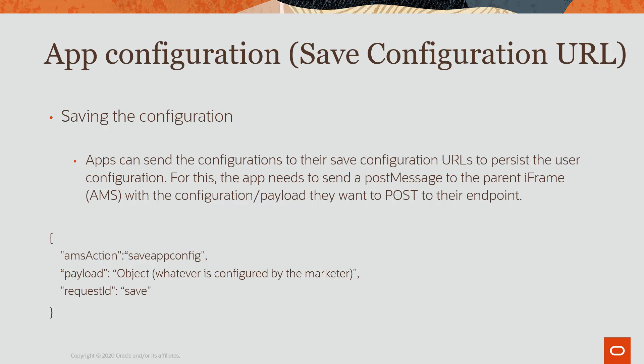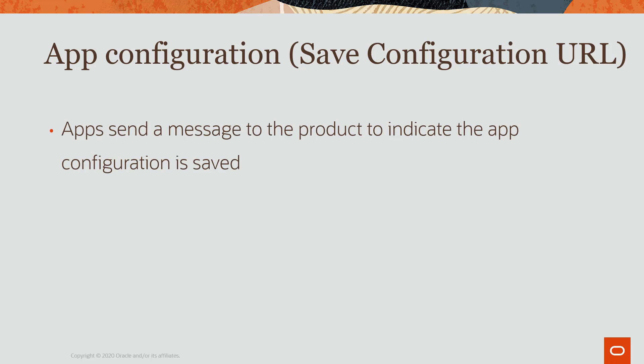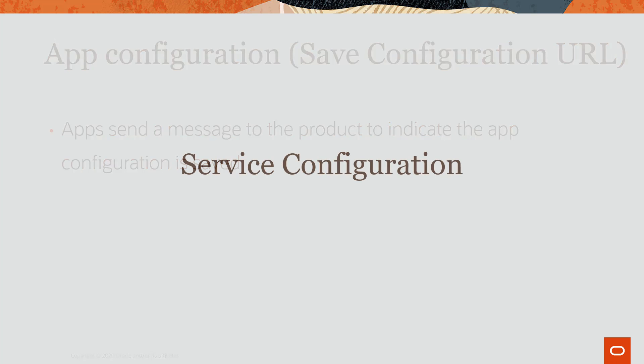Let's take a look at the PostMessage. The AMS action is save app config. The payload is the form data or object — whatever is configured by the marketer. And the request ID is save. The app can then send a message to the product to indicate the app configuration is saved and the product can resume its process.